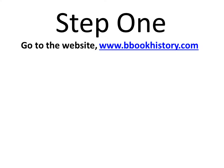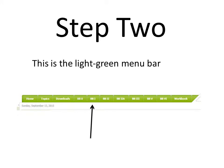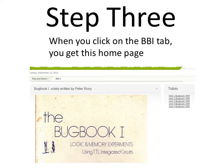Step 1. Go to the following website, www.bbookhistory.com. At this website, you will observe a light green menu bar. You will be clicking on the BB1 menu item. When you click on it, this is the home page of BB1.